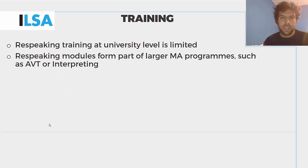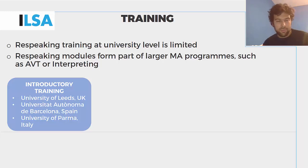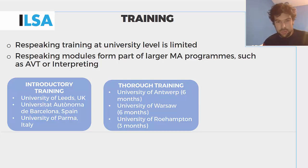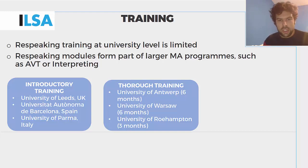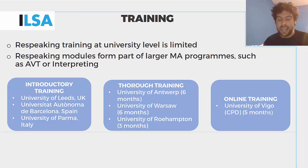Re-speaking training at university is limited, perhaps with the exception of a few modules included within larger MA programs, such as audiovisual translation or interpreting programs. There is introductory training at the University of Leeds in the UK, the University of Barcelona, the Autonomous University of Barcelona, and in Parma, Italy. There is more thorough training at the University of Antwerp in Belgium and the University of Warsaw in Poland — six months each — and at the University of Roehampton in London, where training lasts three months. The University of Vigo is offering the first online re-speaking course, which is an interlingual re-speaking course with an intralingual component, based on ILSA project material, and lasts around five months.